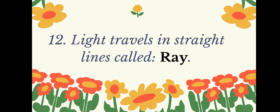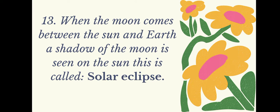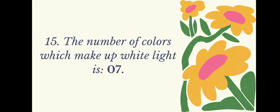Light travels in straight lines called rays. When the moon comes between the Sun and Earth, a shadow of the moon is seen on the Sun — this is called a solar eclipse.